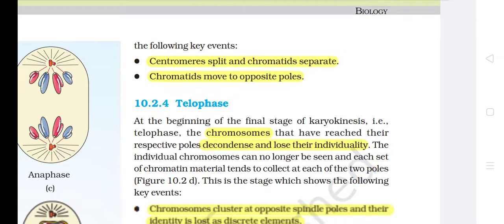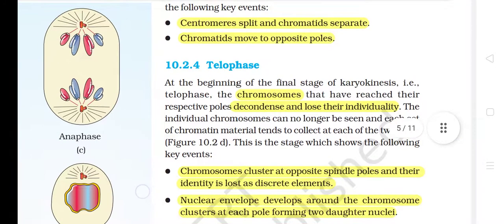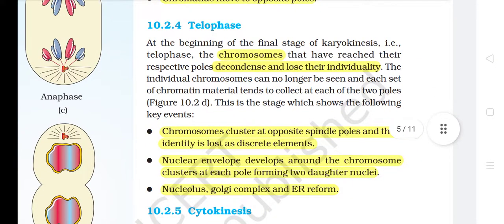10.2.4 Telophase. At the beginning of the final stage of karyokinesis, i.e. telophase, the chromosomes that have reached their respective poles decondense and lose their individuality. The individual chromosomes can no longer be seen and each set of chromatin material tends to collect at each of the two poles. Key events: chromosomes cluster at opposite spindle poles and their identity is lost as discrete elements; nuclear envelope develops around the chromosome clusters at each pole forming two daughter nuclei; nucleolus, Golgi complex, and ER reform.